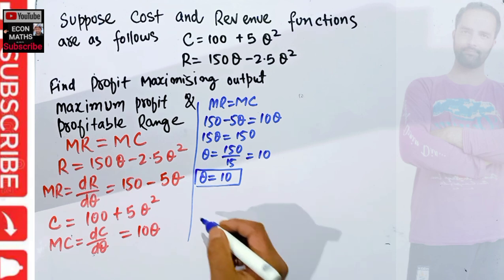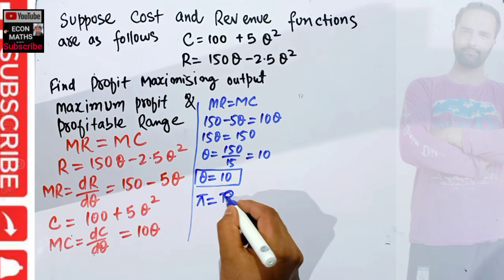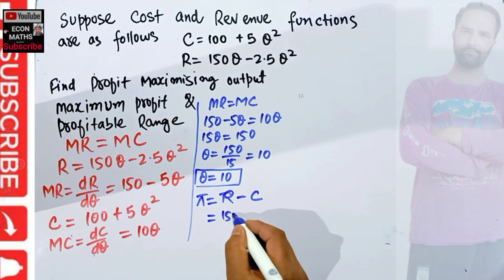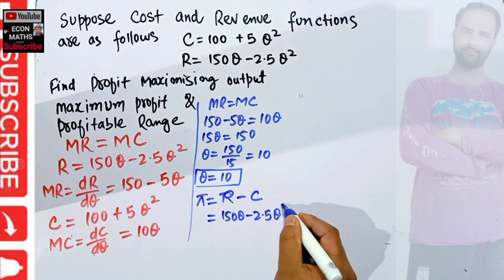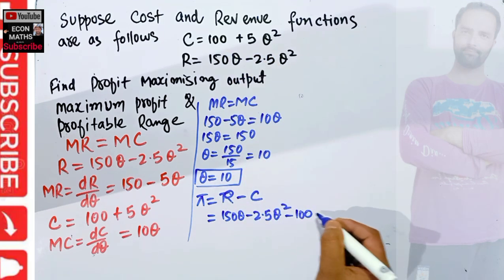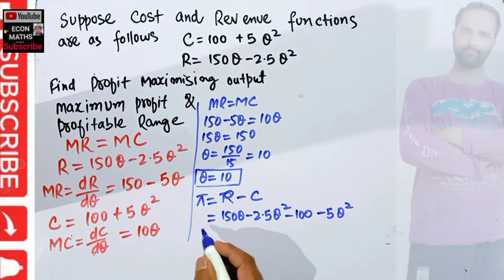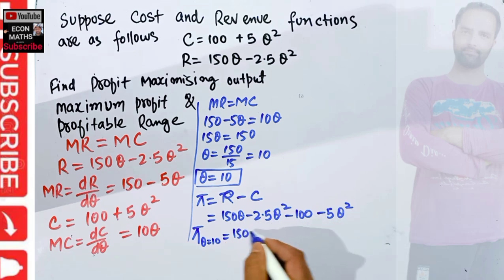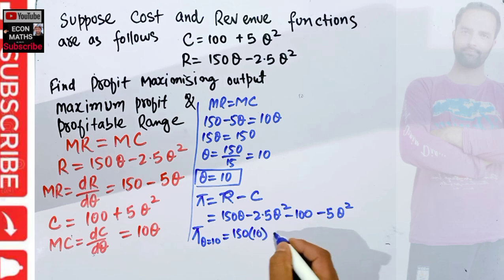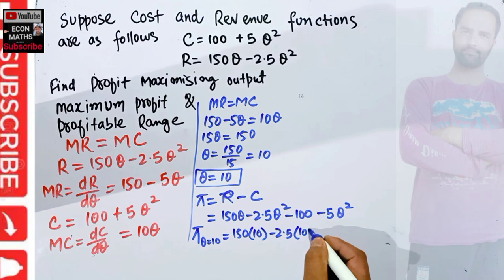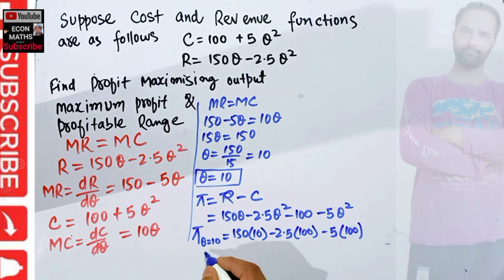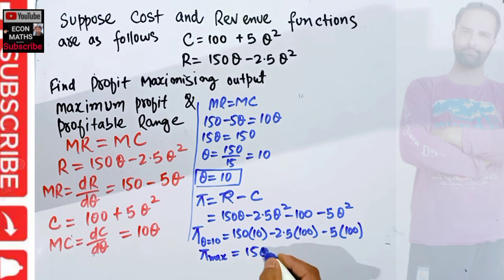To find maximum profit, we know that profit equals total revenue minus cost. Profit = (150Q − 2.5Q²) − (100 + 5Q²). To find maximum profit, plug Q = 10 into this function: 150(10) − 2.5(100) − 100 − 5(100). Solving this expression gives us a maximum profit equal to 150.